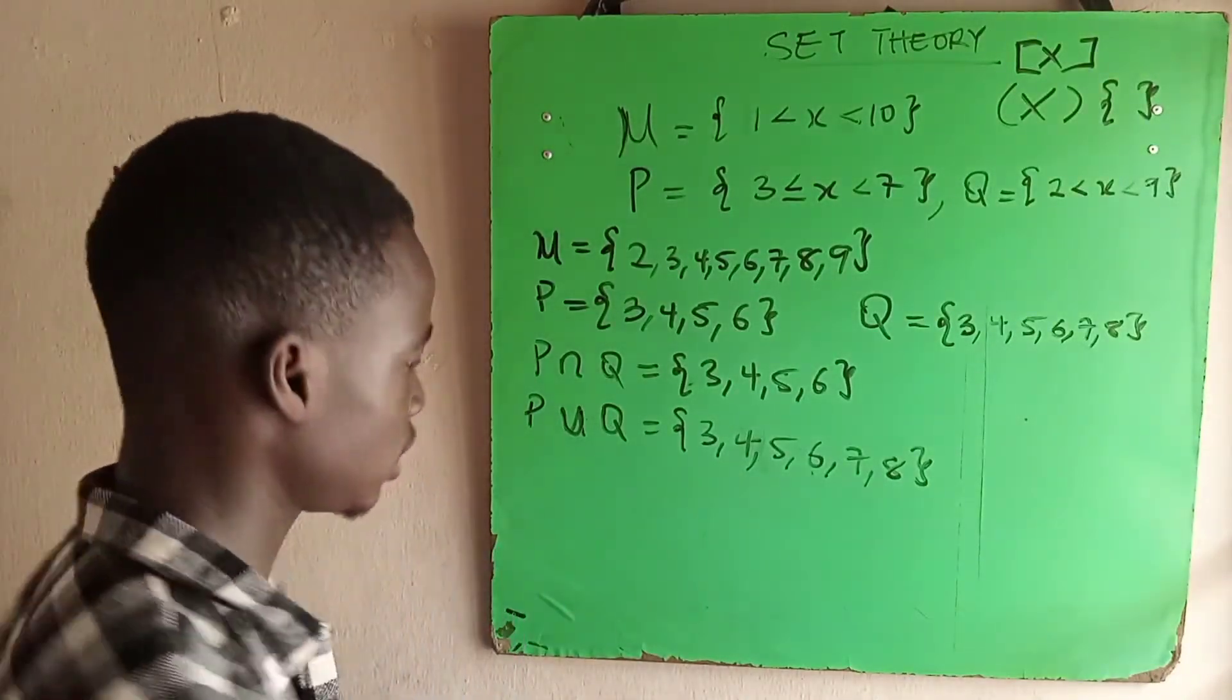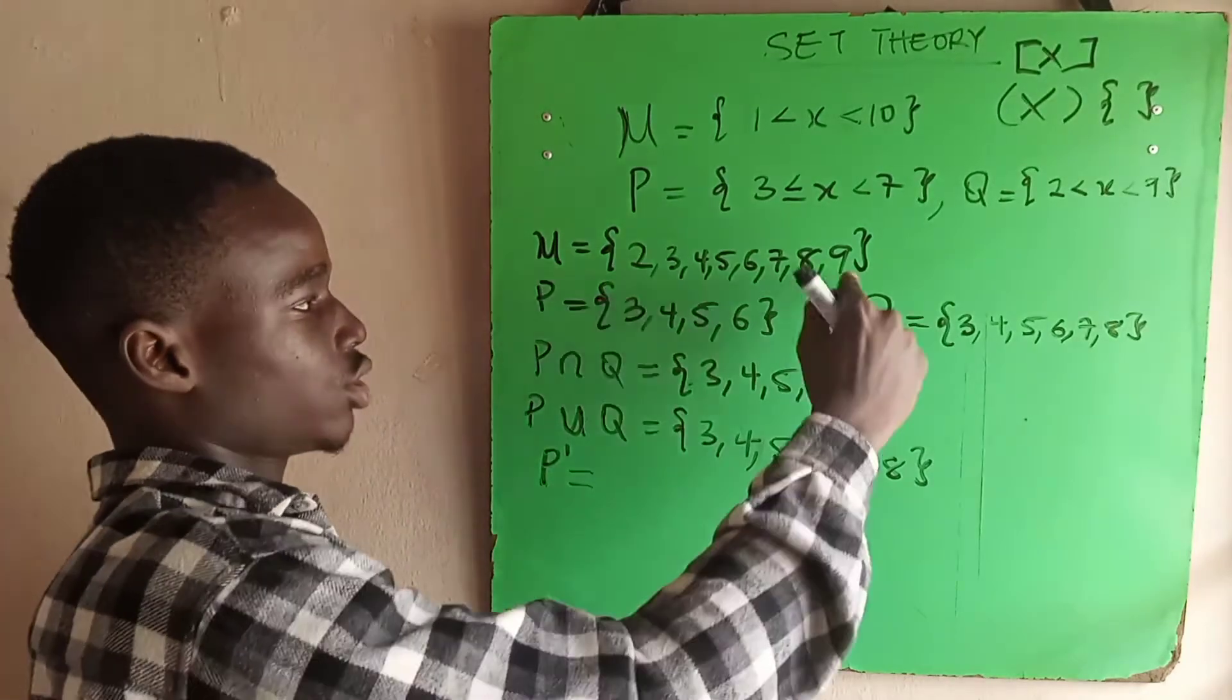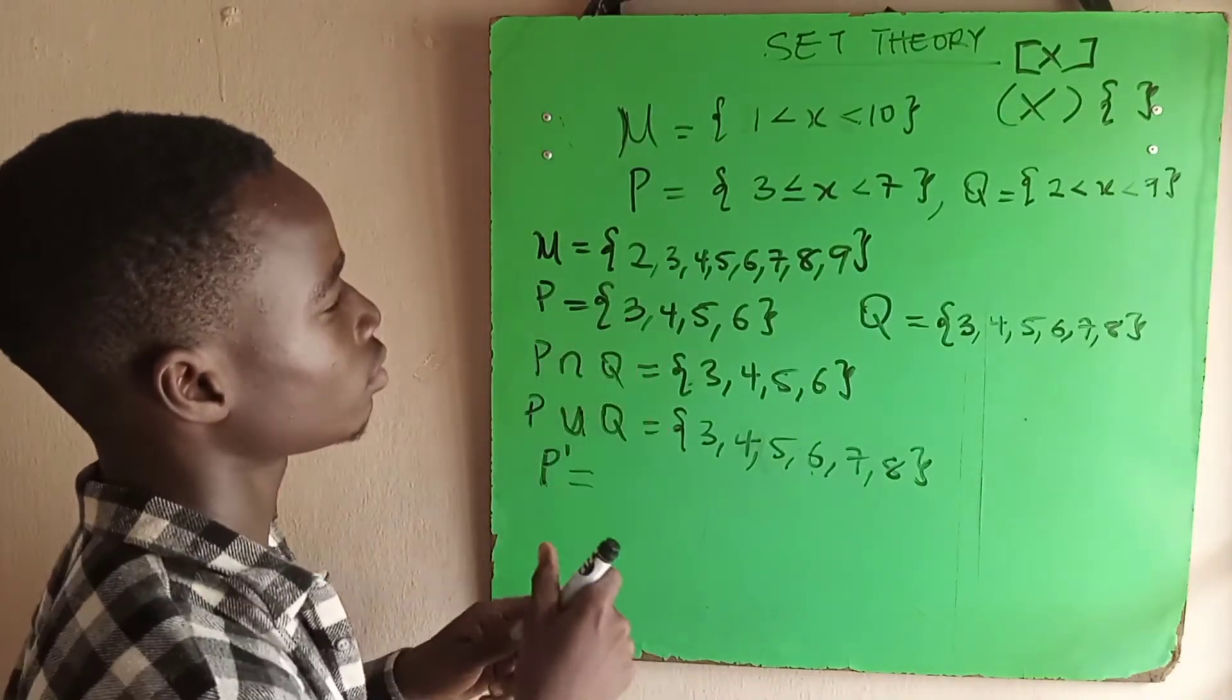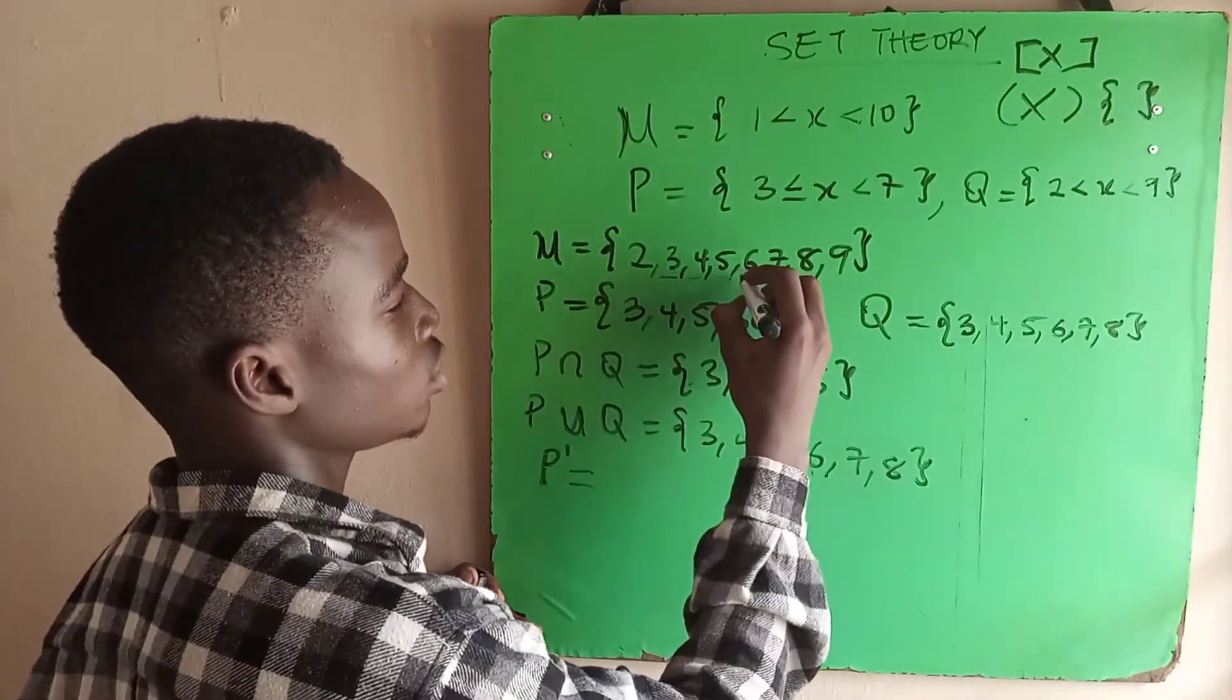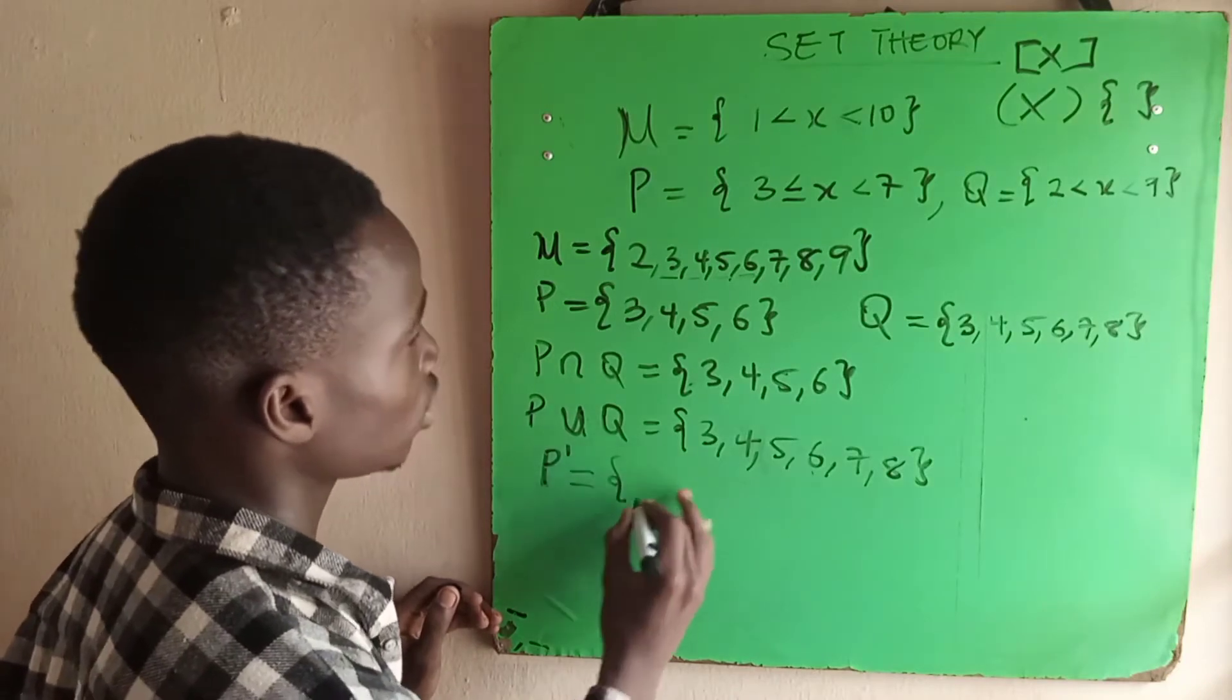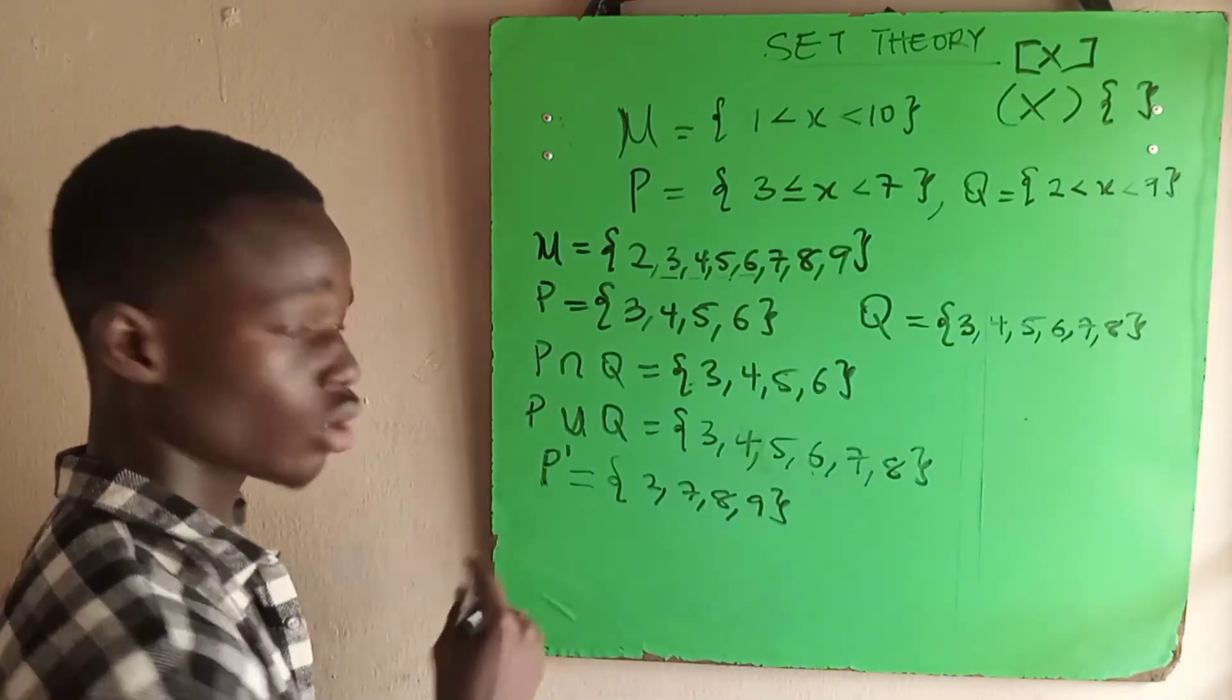The next thing is to find P complement, which can also be called P prime. What P complement is: look at your universal set. Anything that is in the universal set that is not in P, that is P complement. We have 3, 4, 5, 6 in P. So pick the elements in the universal set that are not in P. It becomes 2, 7, 8, and 9.